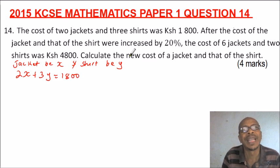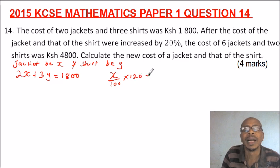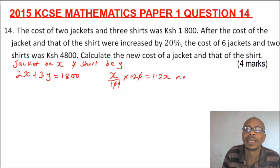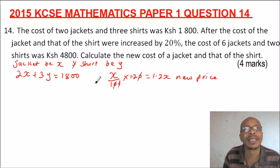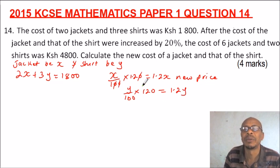We are told that the cost of the jacket and the shirt were increased by 20%. So the new cost of the jacket is x divided by 100 multiplied by 120%, which gives us 1.2x. The same applies to the shirt: y divided by 100 multiplied by 120 gives us 1.2y.